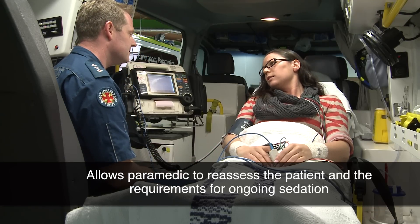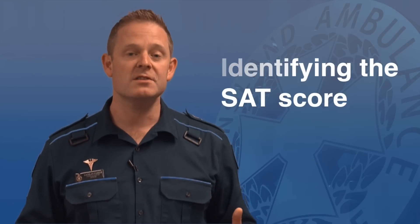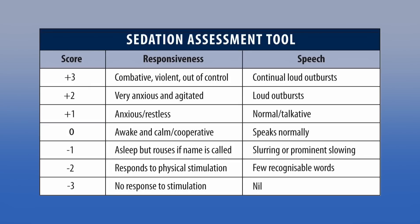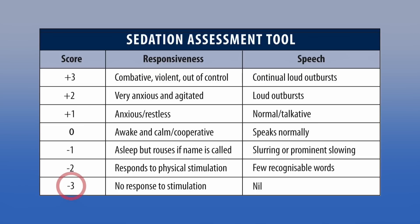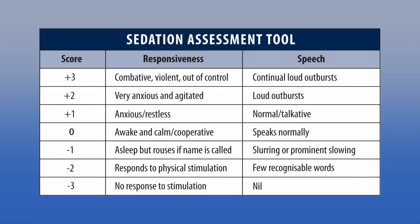To identify the STAT score is very simple. Using the supplied table, we identify the most appropriate score for the two variables: the patient's responsiveness and also their speech pattern. We award a score of minus three to positive three, remembering the highest score allocated to either one of the variables is the patient's STAT score. For example, a patient displaying very agitated and anxious behaviour however speaks normally would receive a STAT score of plus two.